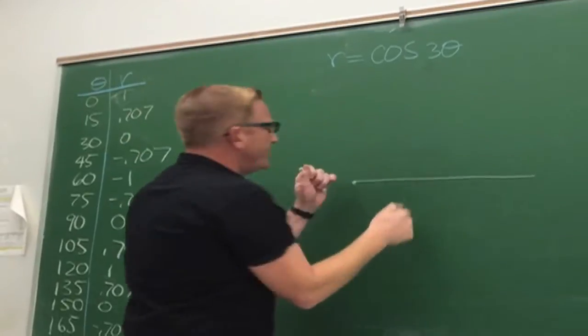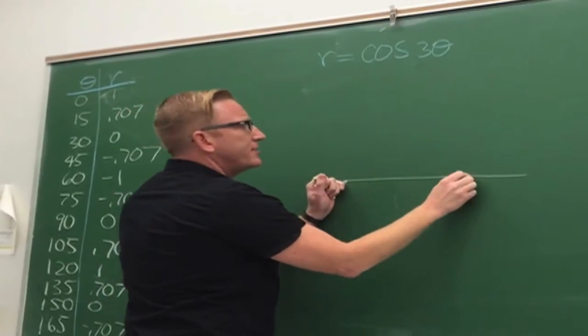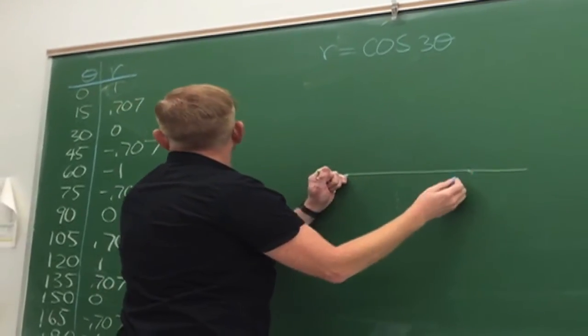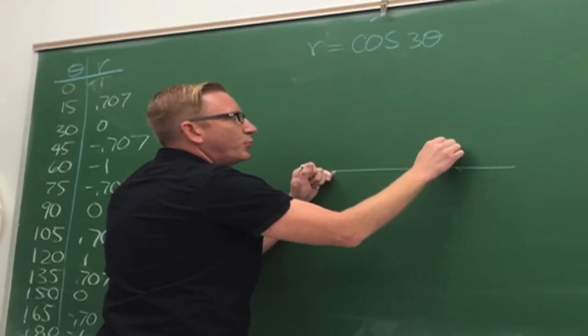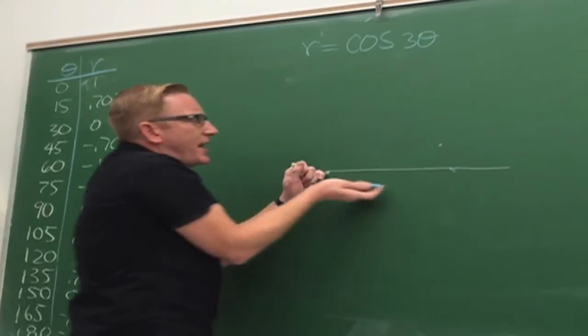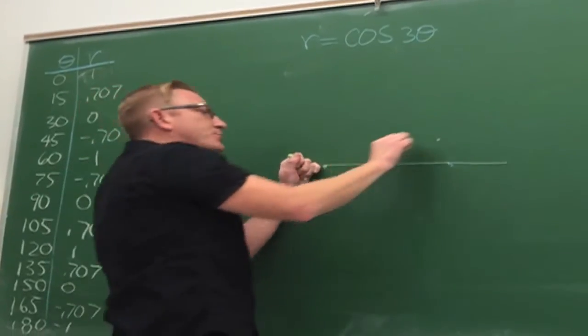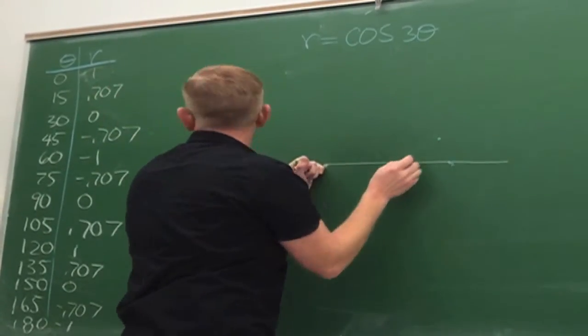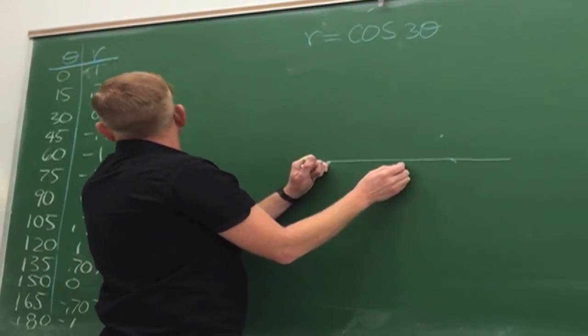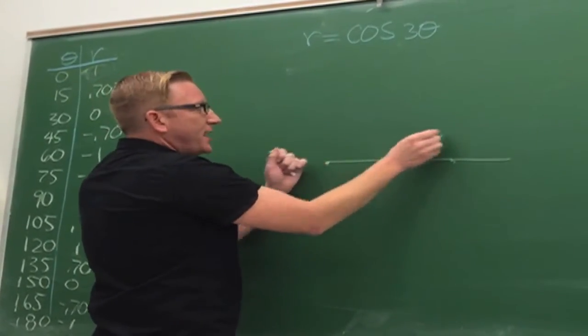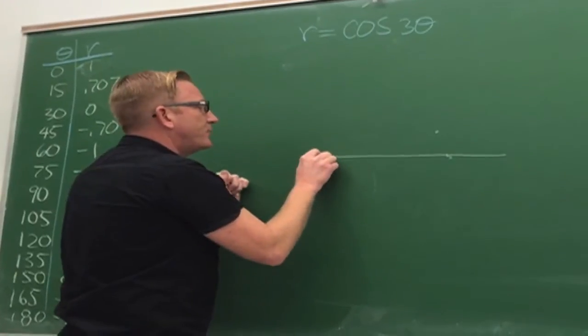Let's go. When theta is zero, r is one. When theta is 15, r is 0.07 — I'm rotating this way and I'm going out that far. When theta is 30 degrees, I'm hearing zero.